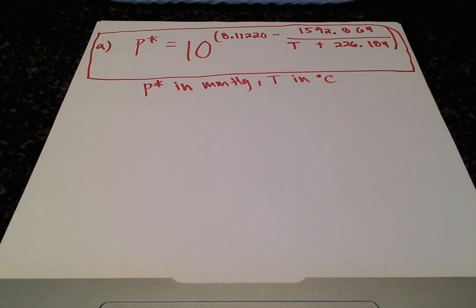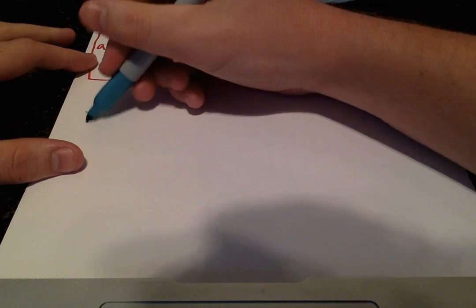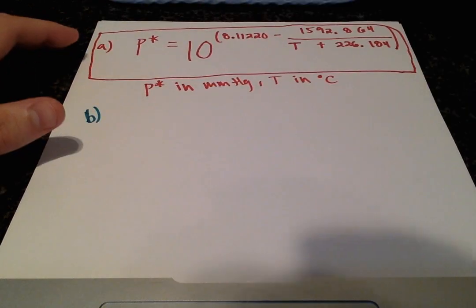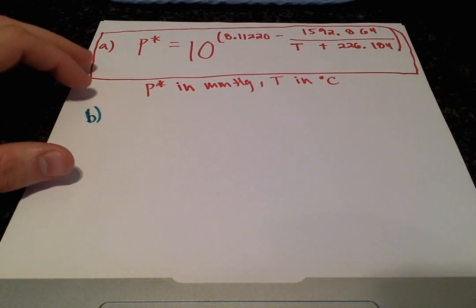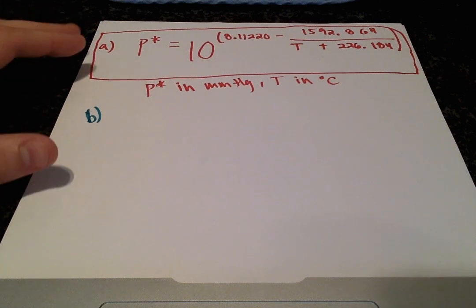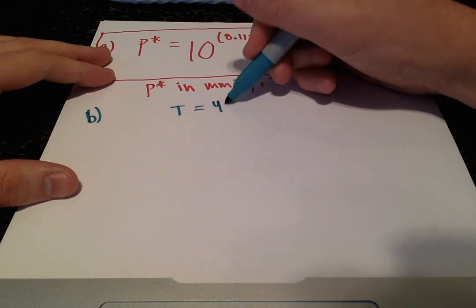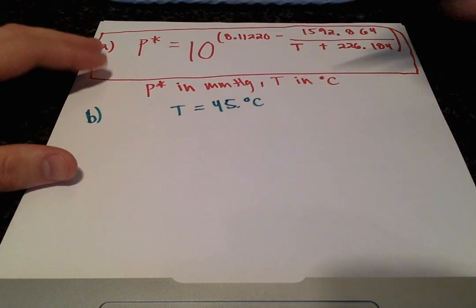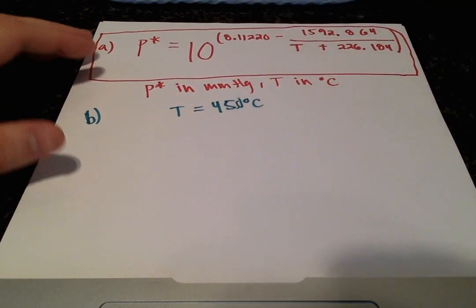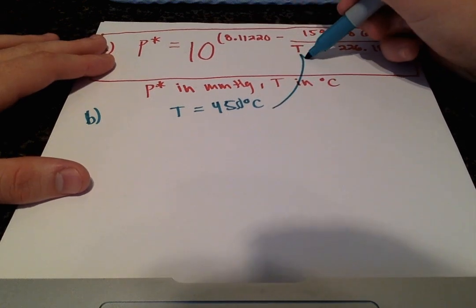So all we're doing for part B is using this equation we just solved for, and we're going to be plugging in the given temperature value of 45 degrees Celsius. That's just going to be going into here.